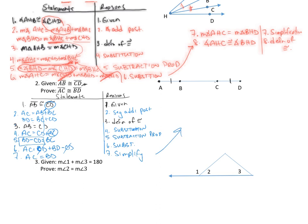And step eight: AC is congruent to BD, by definition of congruence.